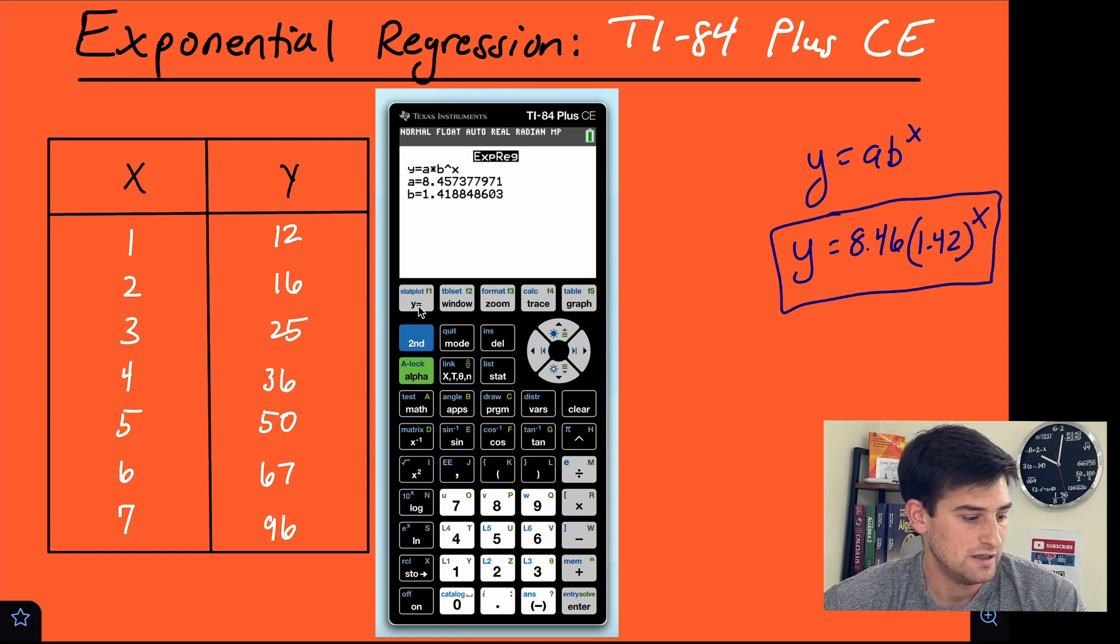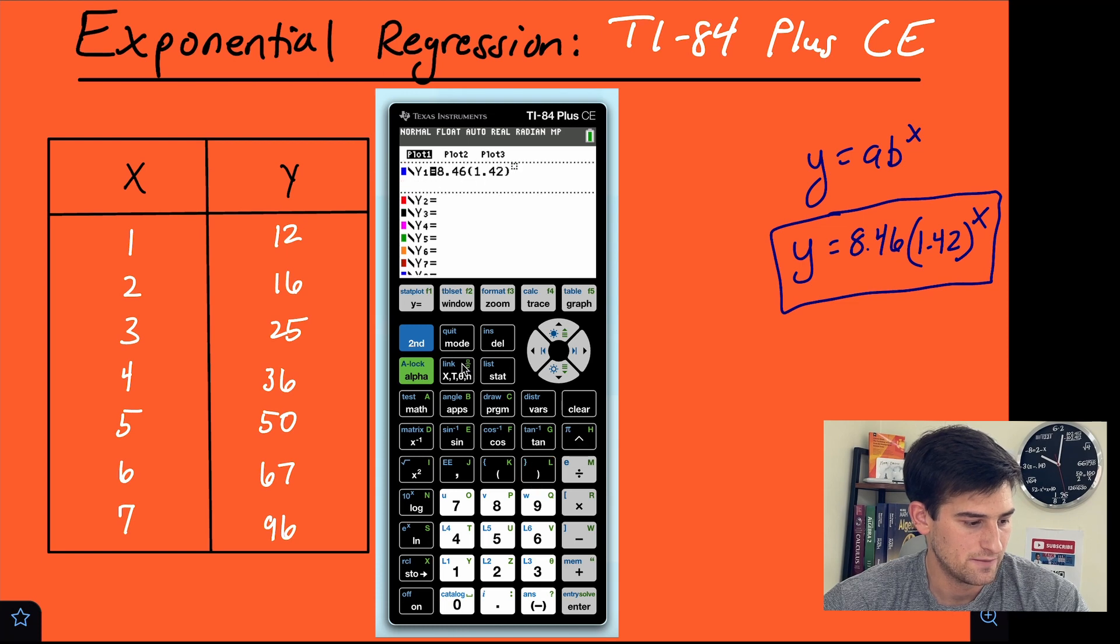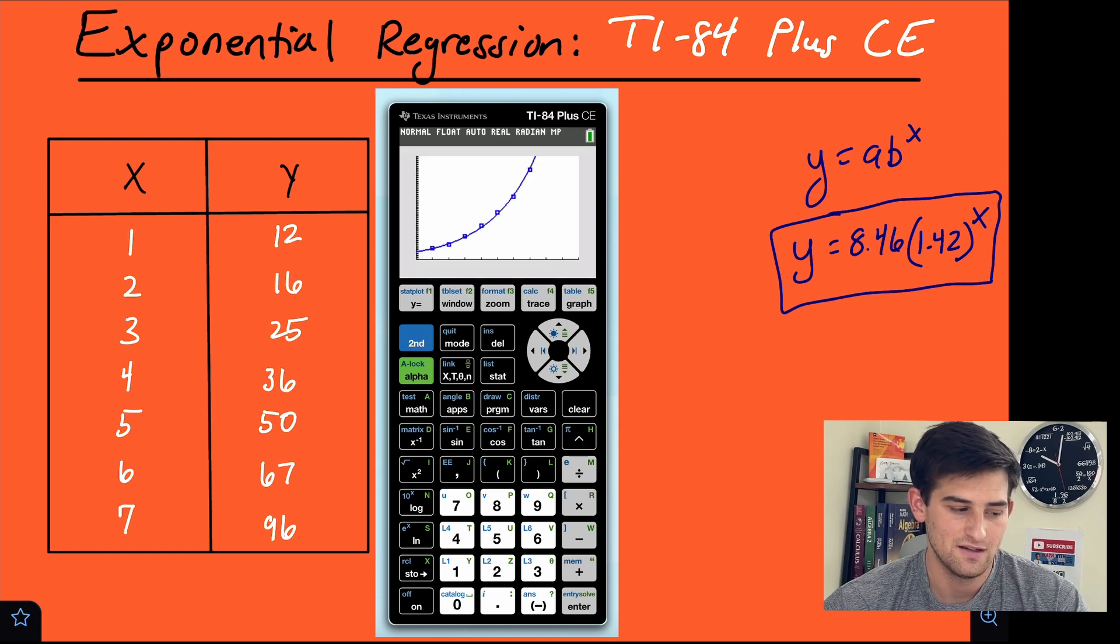So now once we have that, we could now go back into y equals and we could actually graph this so that we could see our line of best fit or our curve of best fit go through our points. So we had 8.46 and parentheses 1.42 and to the x power. So we hit graph and it looks great.